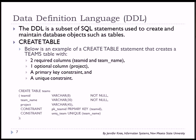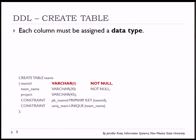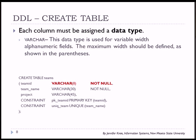We have an example here in smaller print of a CREATE TABLE statement creating a table called Teams. This has two required columns and one column that does not have to be populated when you insert a row, and we have two constraints. Each column must be assigned a data type — in this example, Team ID is variable character with a field size of eight. In general, you should define the field size when using variable character because the default width is probably much larger than what you actually need. In Oracle, I believe it's 4,000 characters. We also have NOT NULL defined, which means that when you add a row to the team table, the Team ID must have data — it cannot be null.